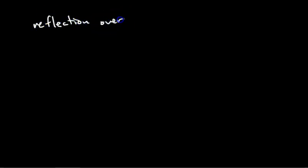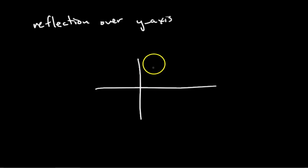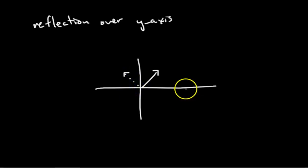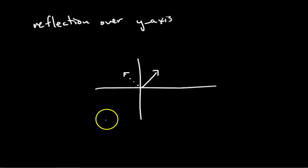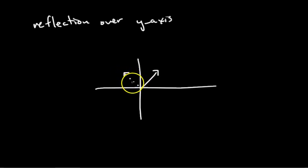Let's do another transformation: reflection over the y-axis. Geometrically, try to determine the eigenvectors and their eigenvalues. An arbitrary vector reflected over the y-axis gets knocked off its span — its output doesn't lie on the same line, so it's not just scaled by some number. That means it's not an eigenvector.